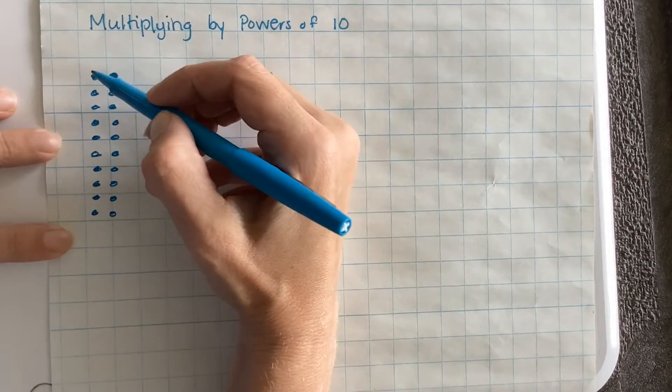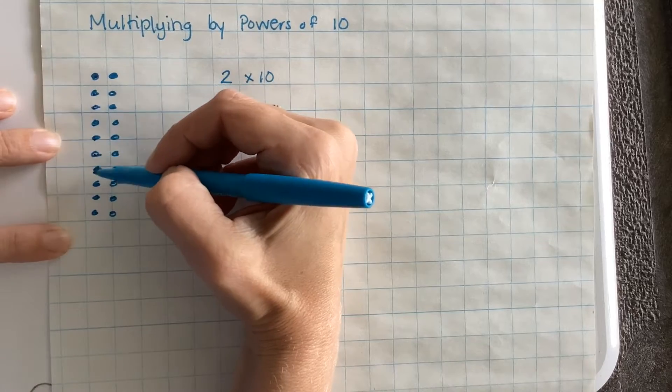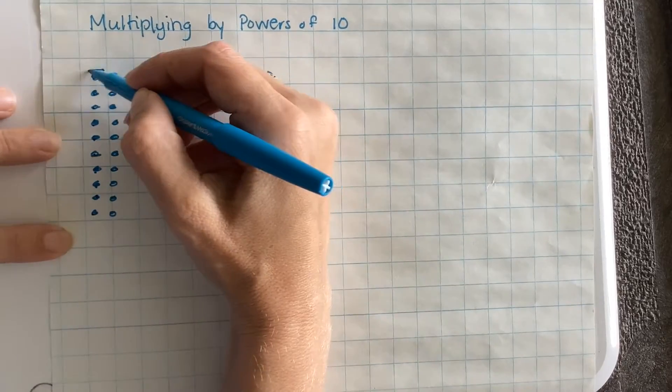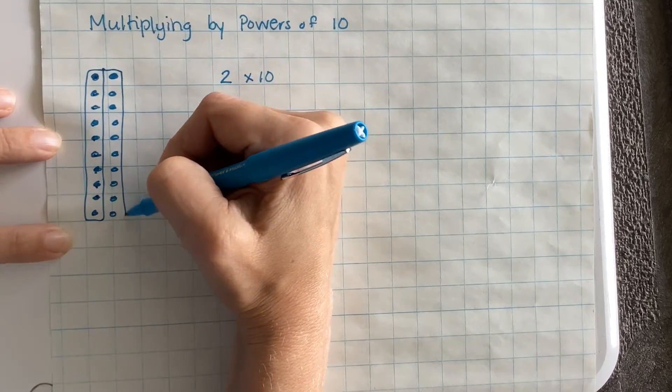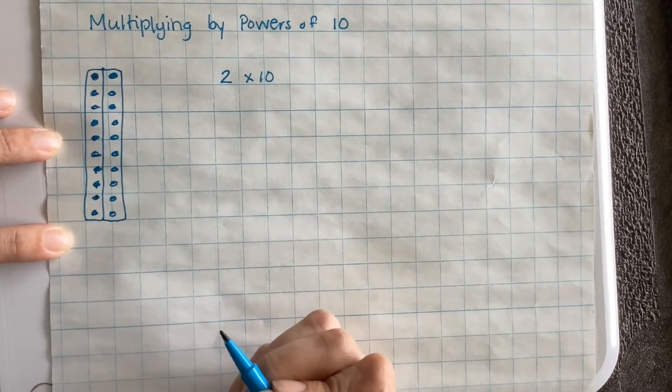As you can see, now I have 1, 2, 3, 4, 5, 6, 7, 8, 9, 10. This is one 10. And here's another 10. I actually have two groups of 10.